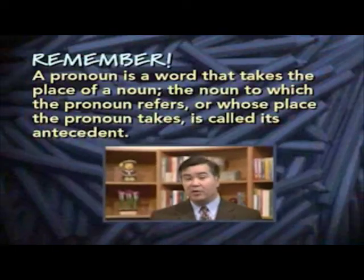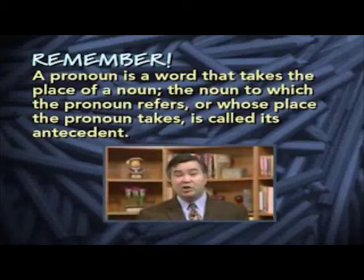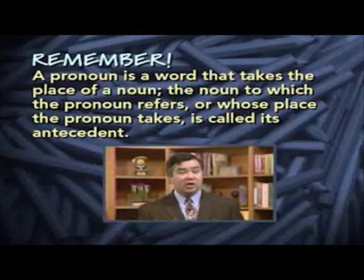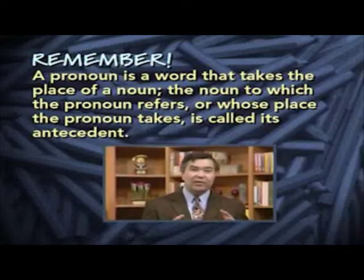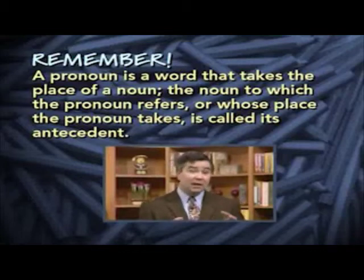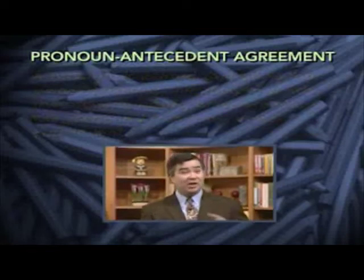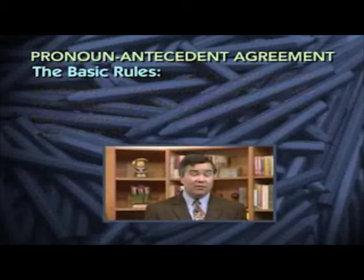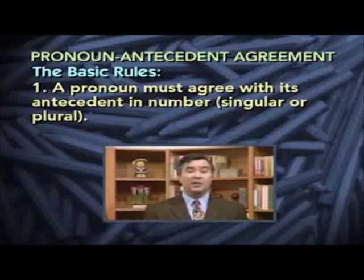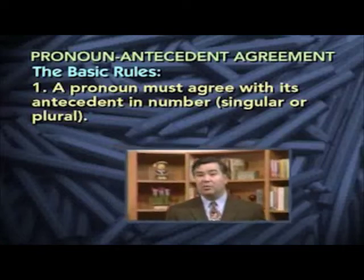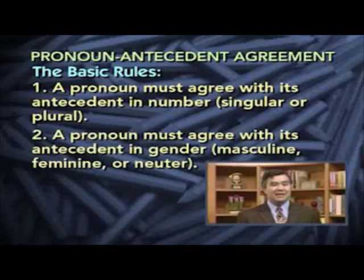So far, we've been talking about agreement between subjects and verbs. In this lesson, we're going to talk about agreement between pronouns and antecedents. A pronoun is a word that takes the place of a noun. The noun to which the pronoun refers — whose place the pronoun takes — is called its antecedent. The antecedent may or may not appear in the same sentence or paragraph. It's important that the pronoun and its antecedent match in a couple of ways. The basic rules are: first, a pronoun must agree with its antecedent in number — a singular antecedent requires a singular pronoun, and a plural antecedent requires a plural pronoun.